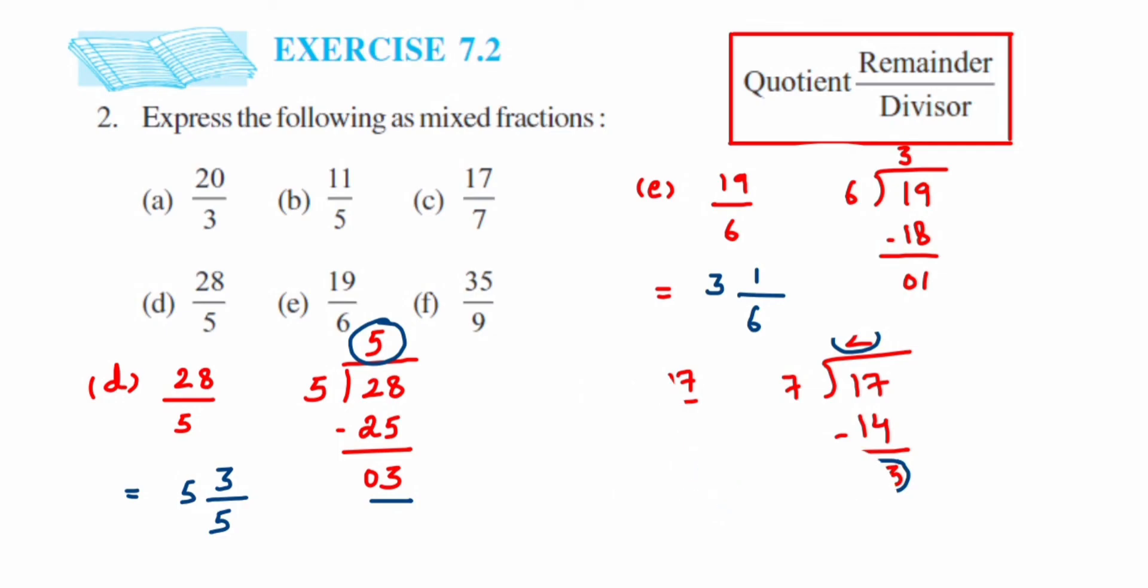Now we have the last problem, F. We have 35 upon 9. Divide 35 by 9. 9 times 3 is 27, subtracted gives remainder 8. This will be equal to: 9 is the denominator, quotient is 3, and the remainder is 8. So it's 3 and 8/9.